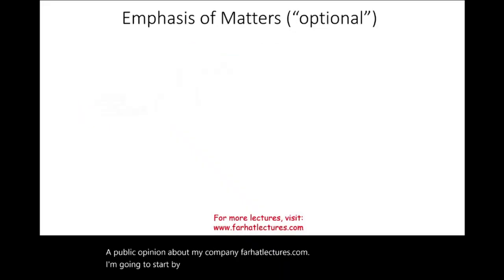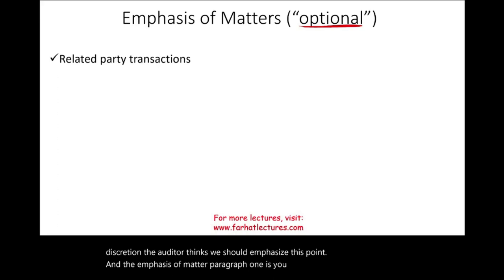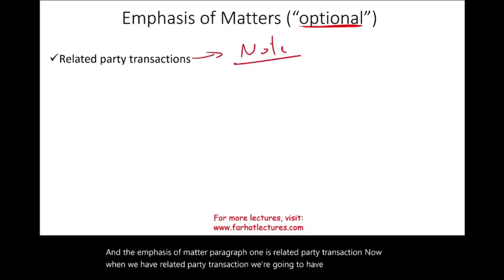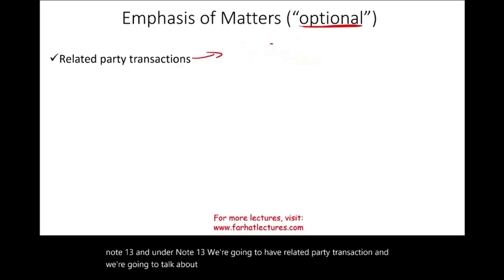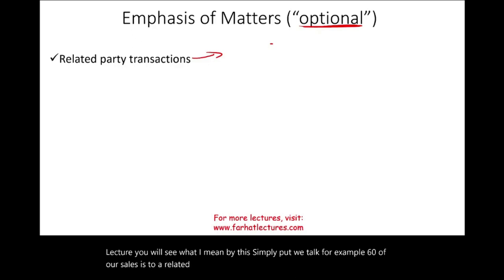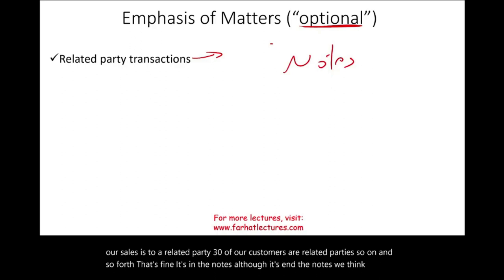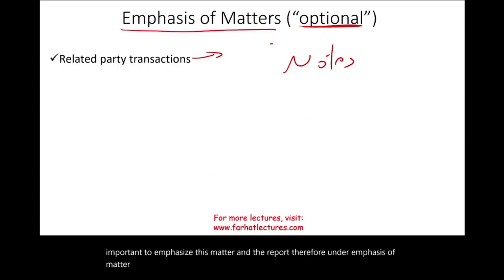I'll start with emphasis of matters that are considered optional — meaning based on the auditor's discretion. One example is related party transactions. When we have related party transactions, there will be a note — say note 13 — discussing related party transactions, such as '60% of our sales is to a related party.' Although it's already in the notes, we think it's important to emphasize this matter in the report. Therefore, under the emphasis of matter paragraph, we include the related party transaction discussion.